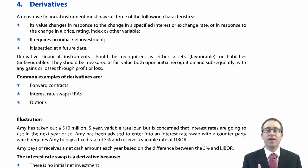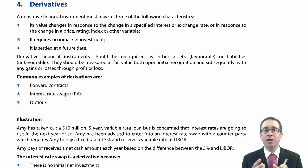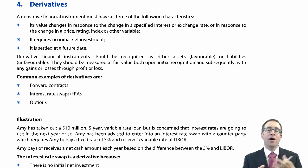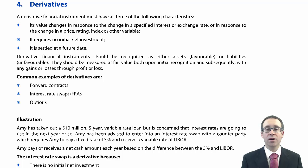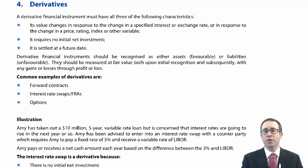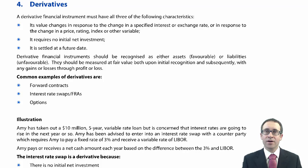A derivative is a special type of financial instrument that can be either a financial asset or a financial liability — it all depends upon the underlying item. That underlying item can give rise to either gains or losses. If we have a gain, that's a favourable financial instrument — a derivative that is a financial asset. If it gives rise to unfavourable conditions, if we're making losses on the instrument, then that is a financial liability derivative. So it can be a financial asset or financial liability within the financial statements.